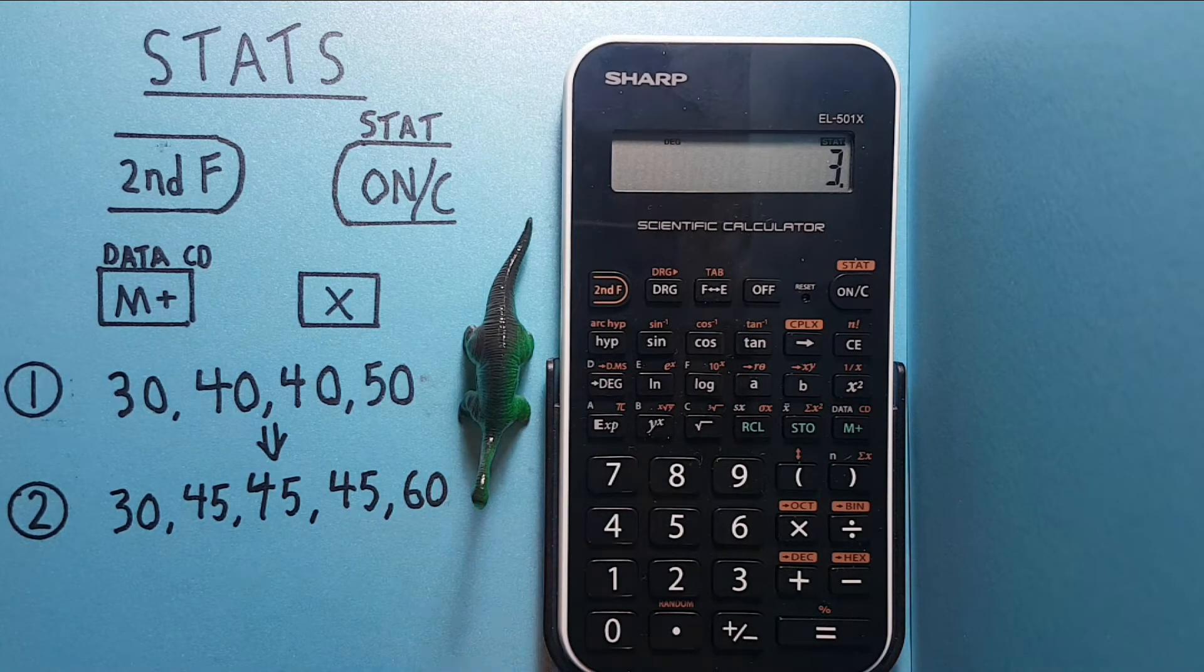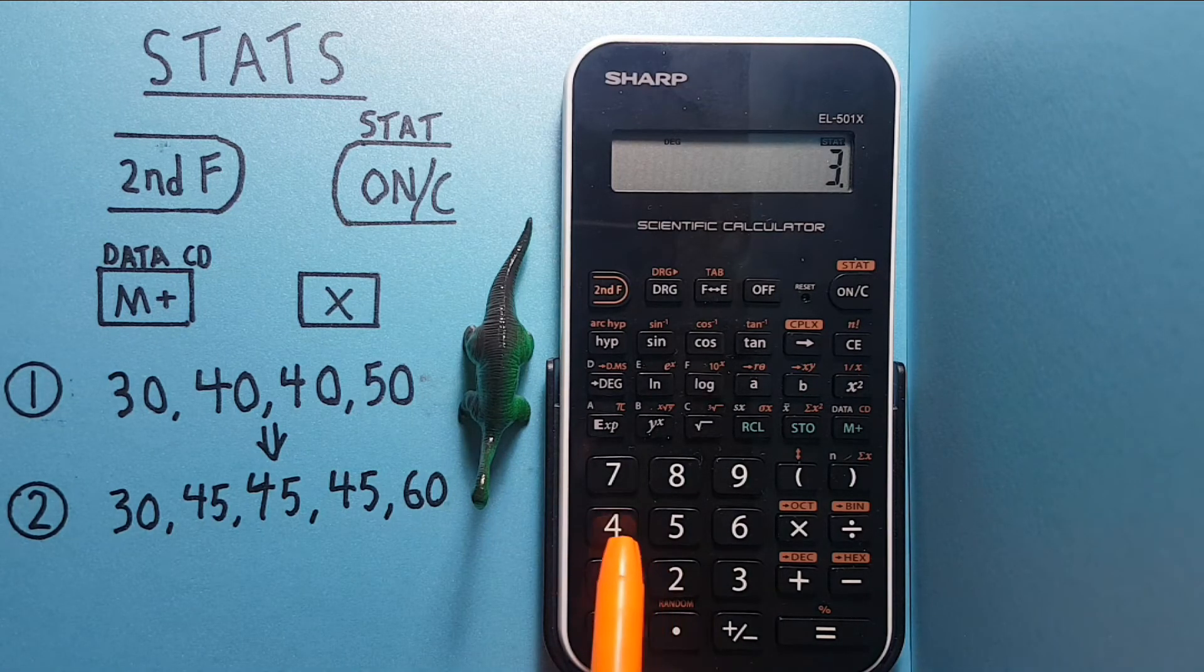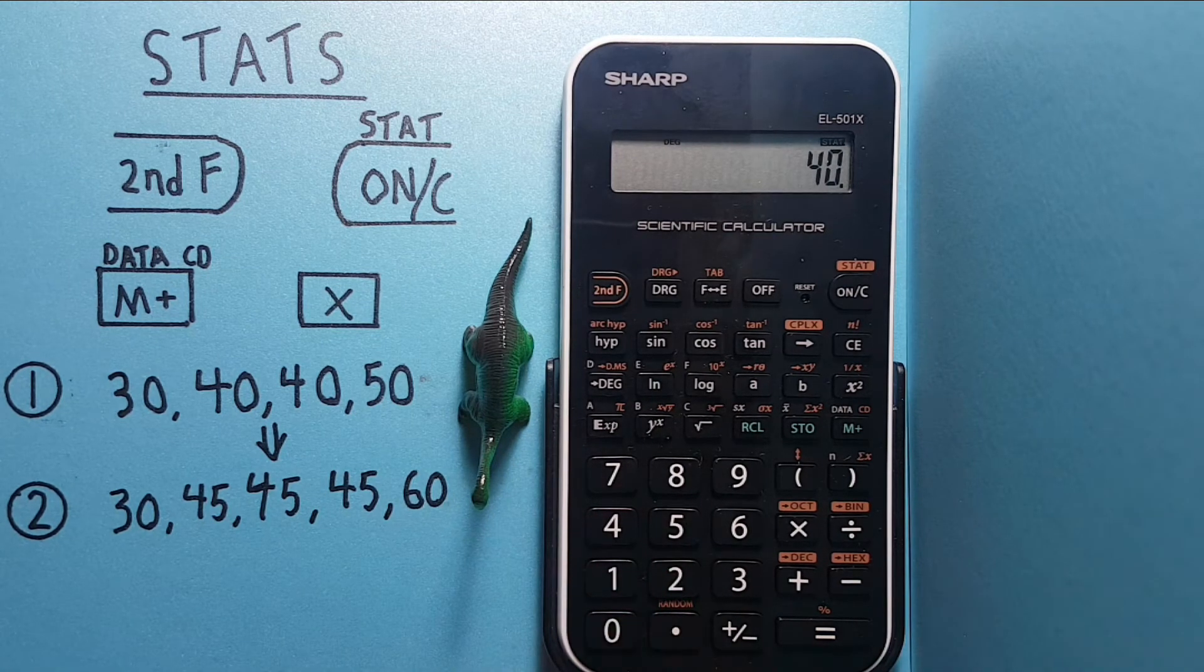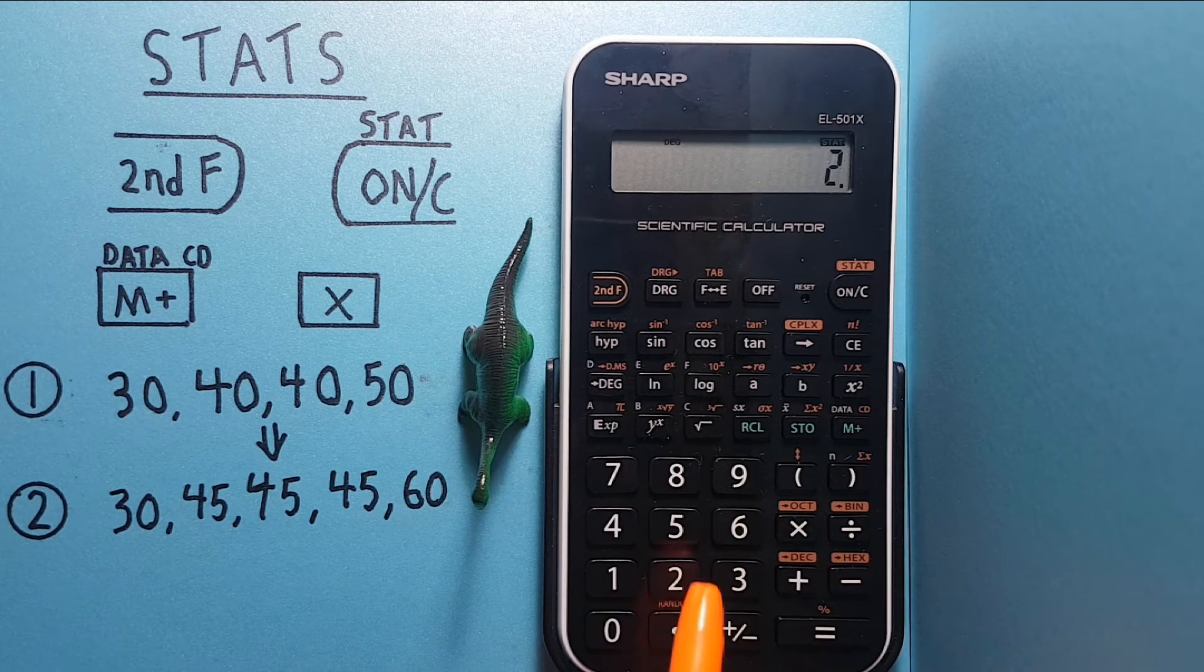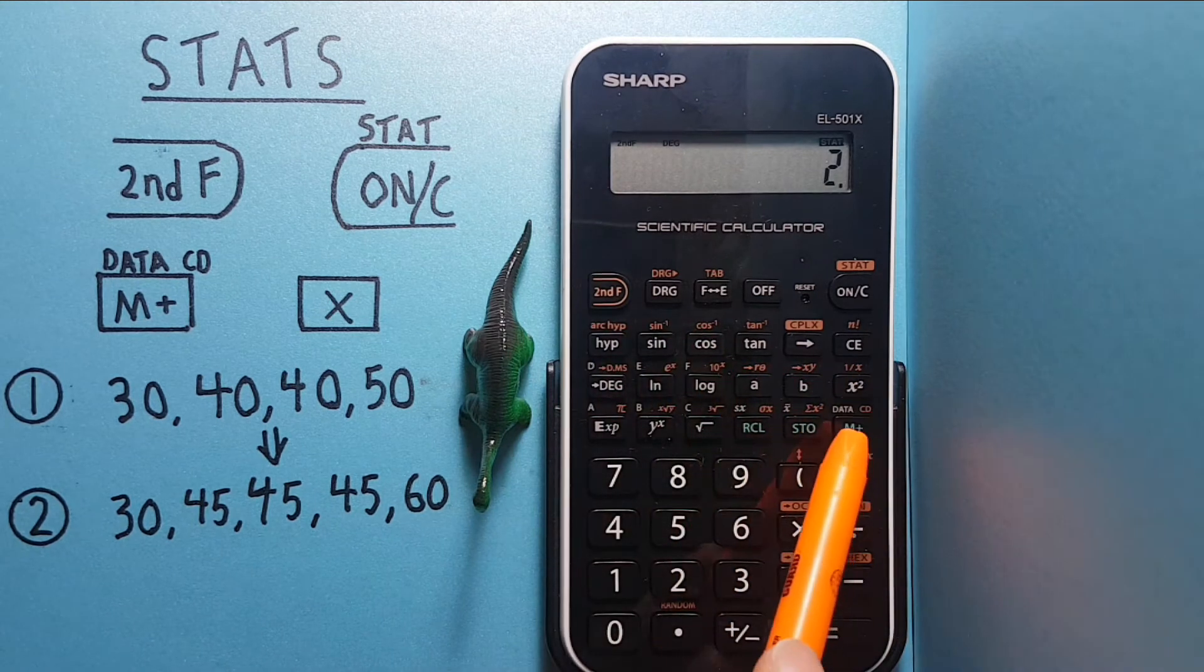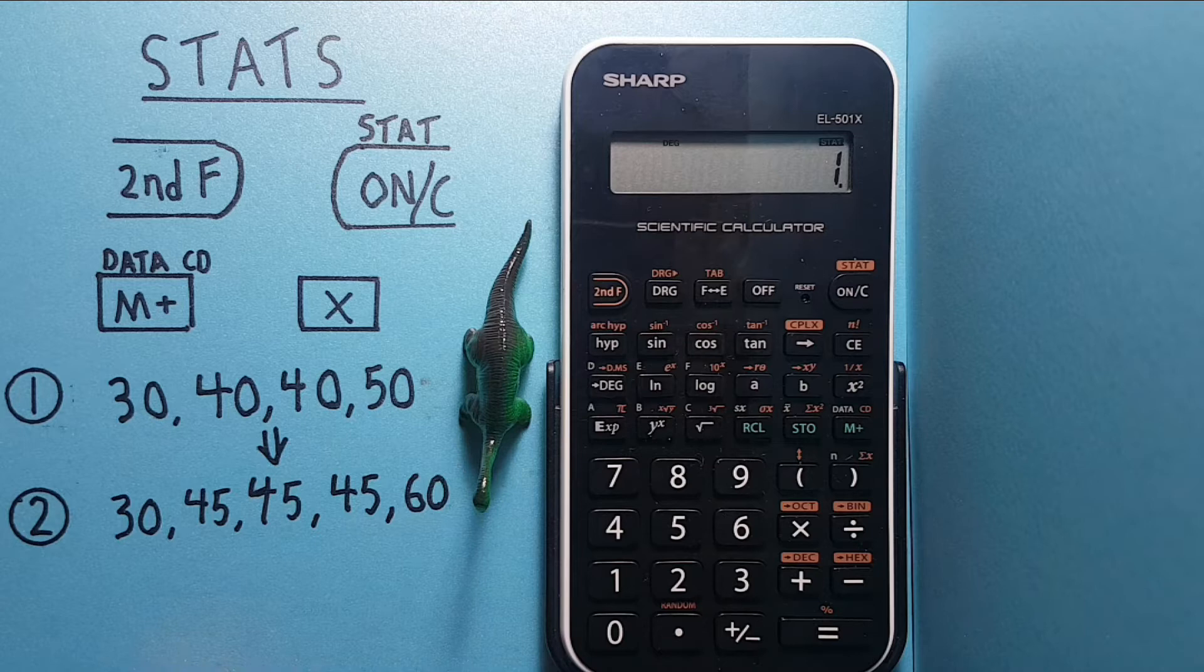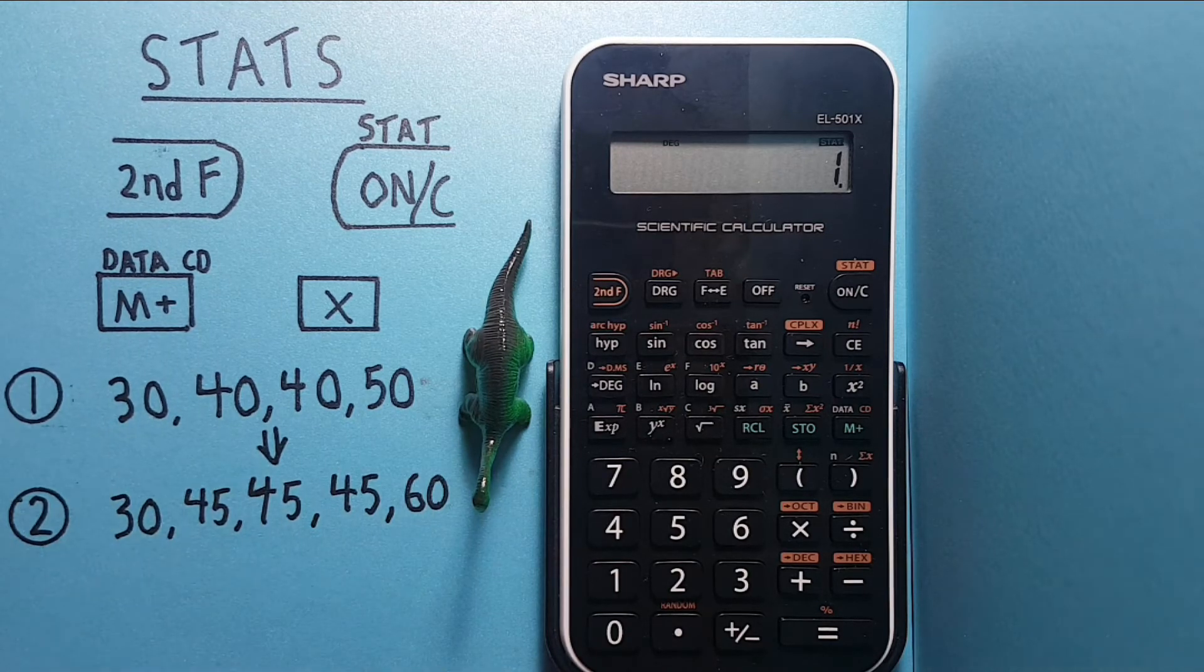Let's take the 40s out. Just like how we entered them, we can put 40 on the stack, times two, and then second function CD. You can see we now only have one number. That's our 30, which is the actual number we want.